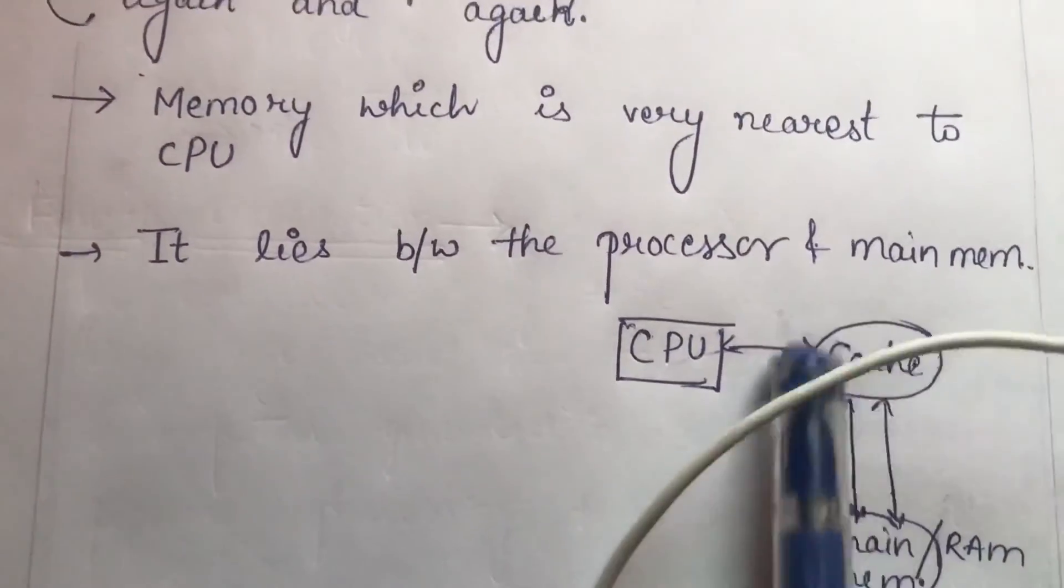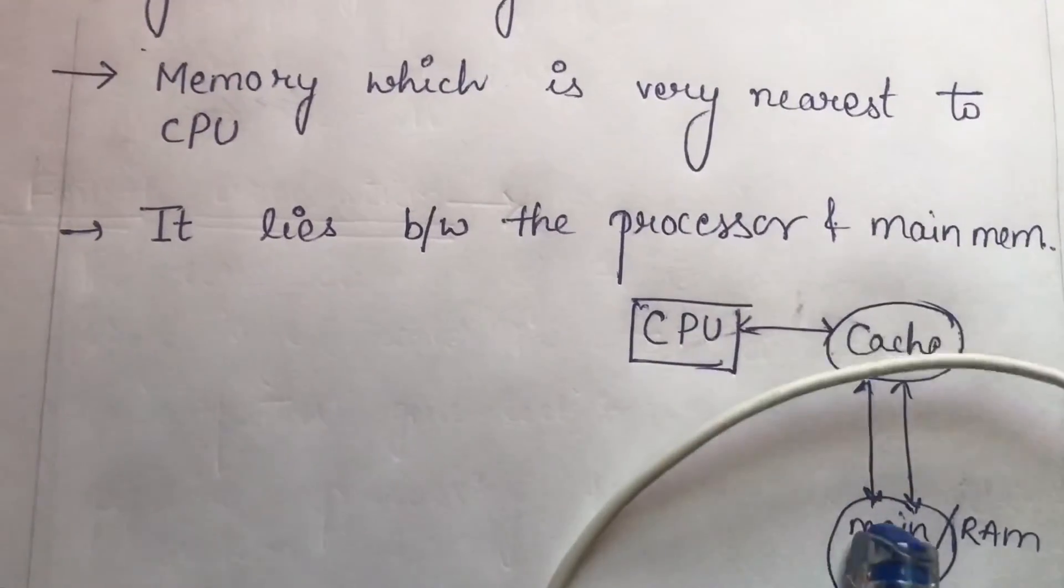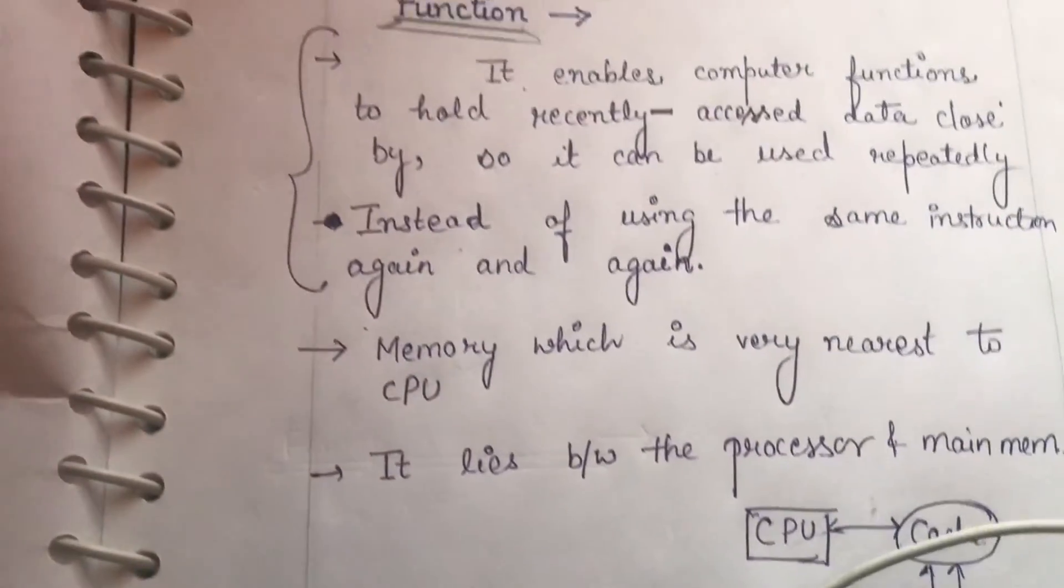CPU is our processor. Here is our main memory, slash RAM, and cache memory. This is the nearest and small. This is the CPU and main memory.